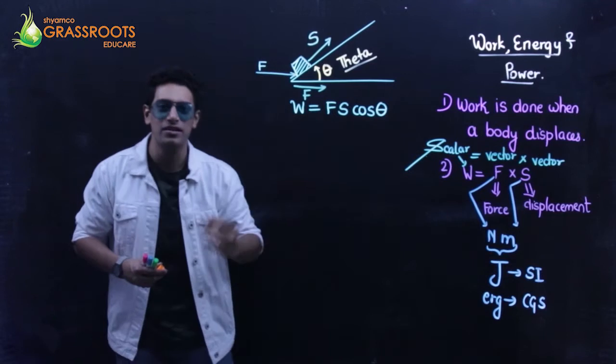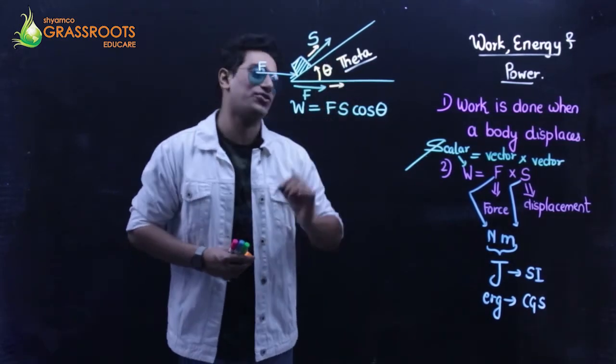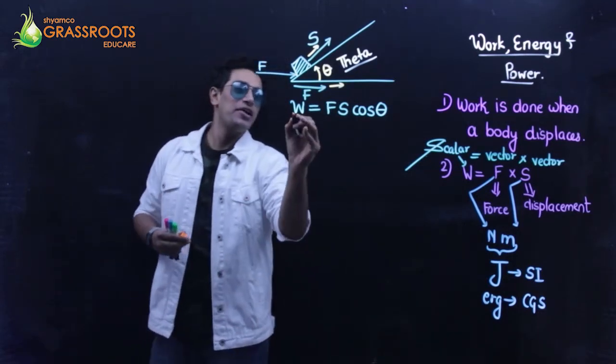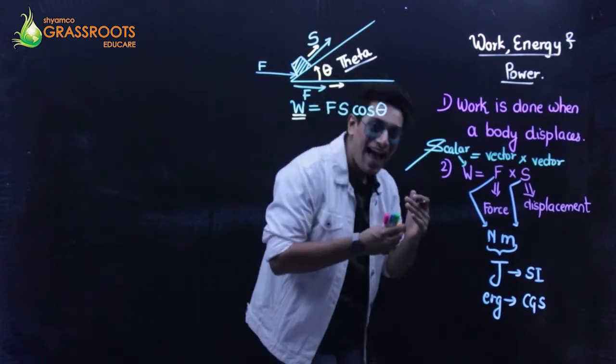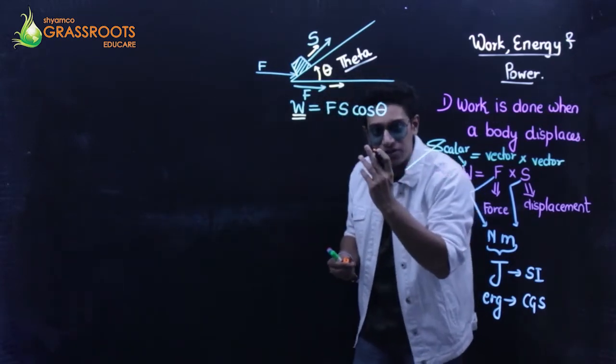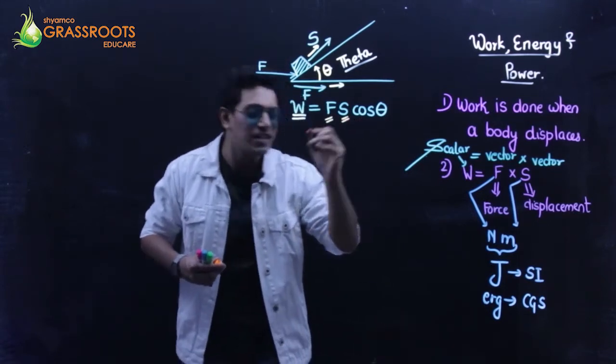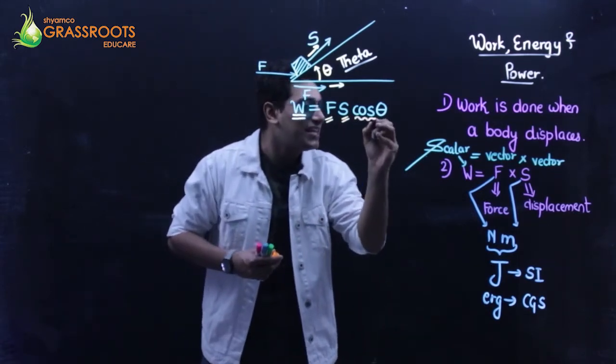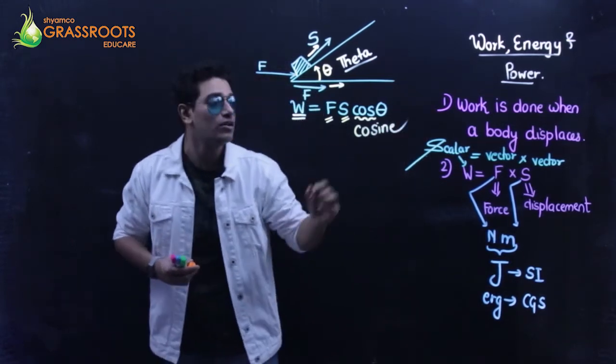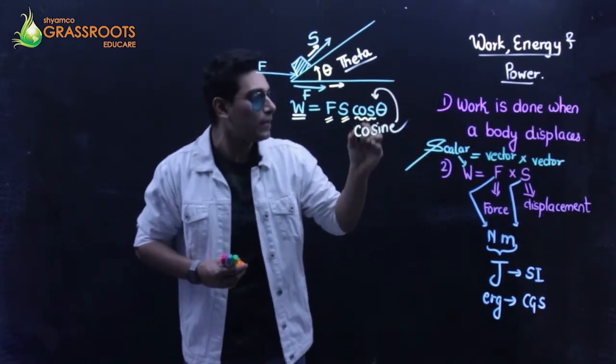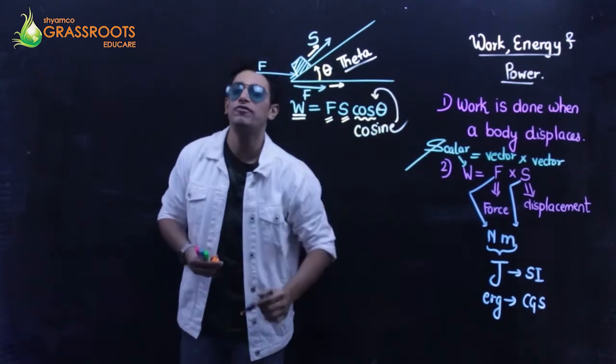Theta is the angle between the displacement and the force. So, I can say the work done by a body actually depends upon three factors. It depends upon the magnitude of force, the displacement, and the cosine, the actual word is cosine, of the angle. Cosine of the angle between displacement and force.